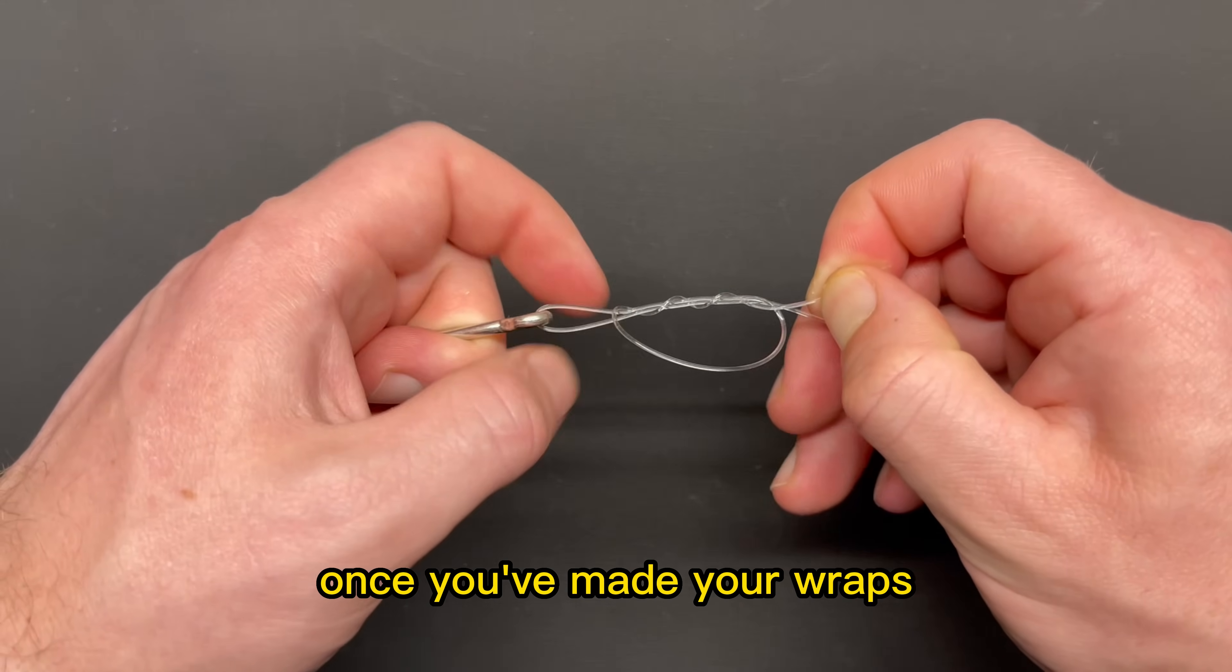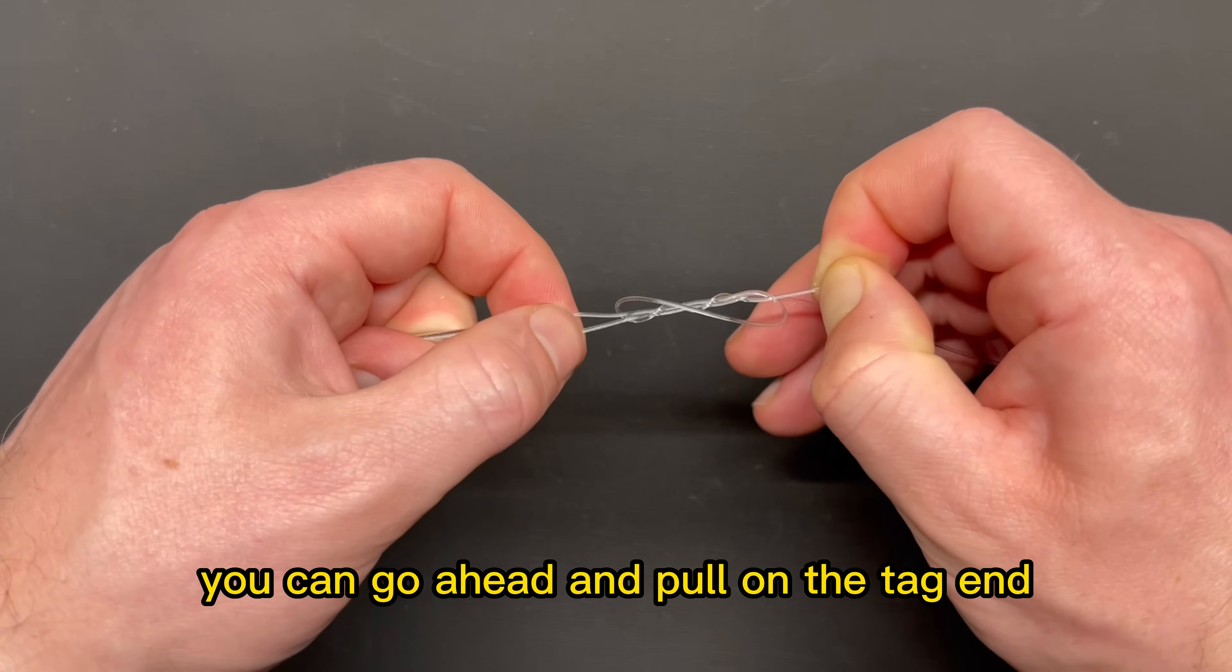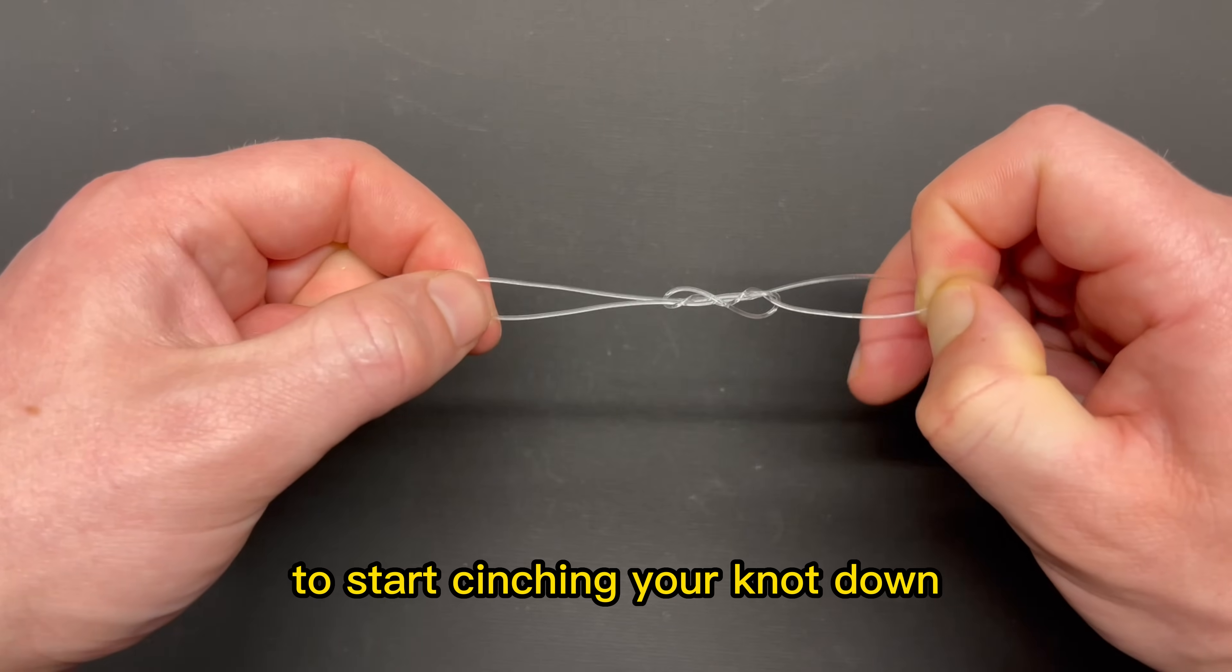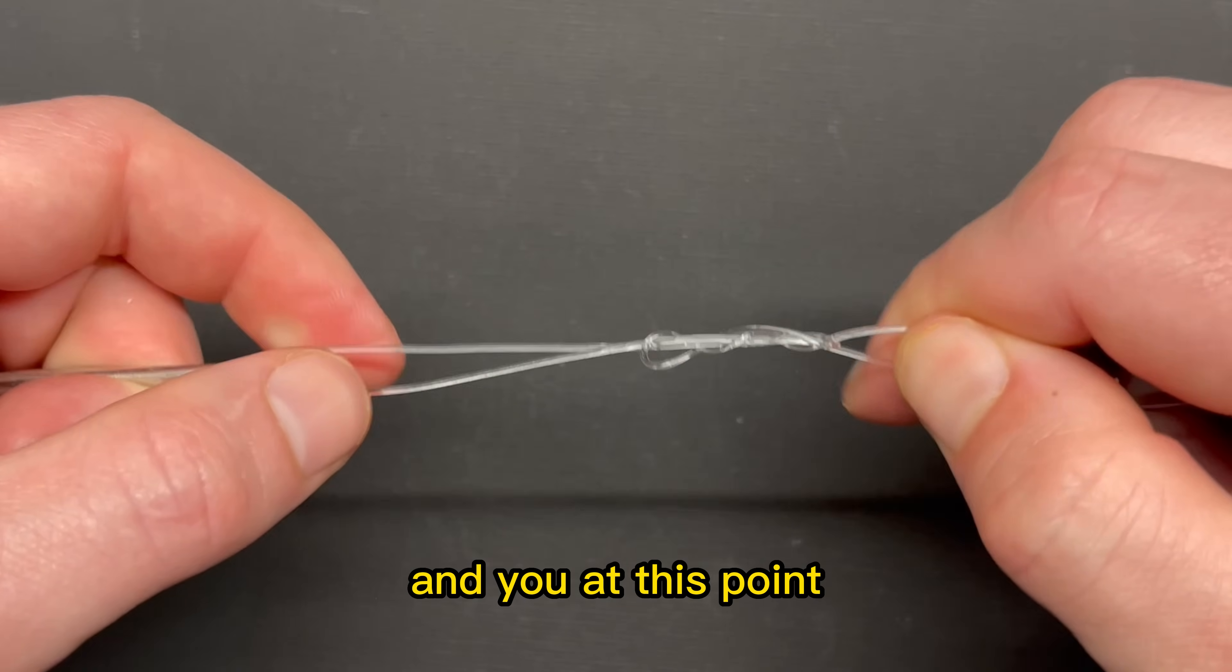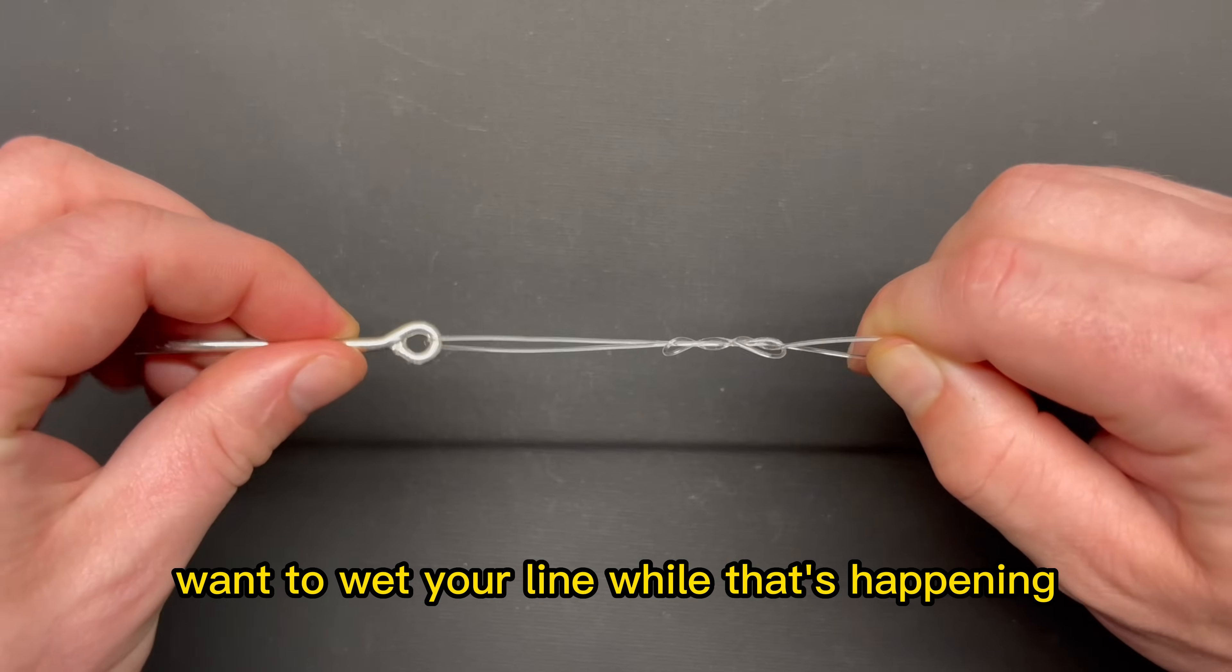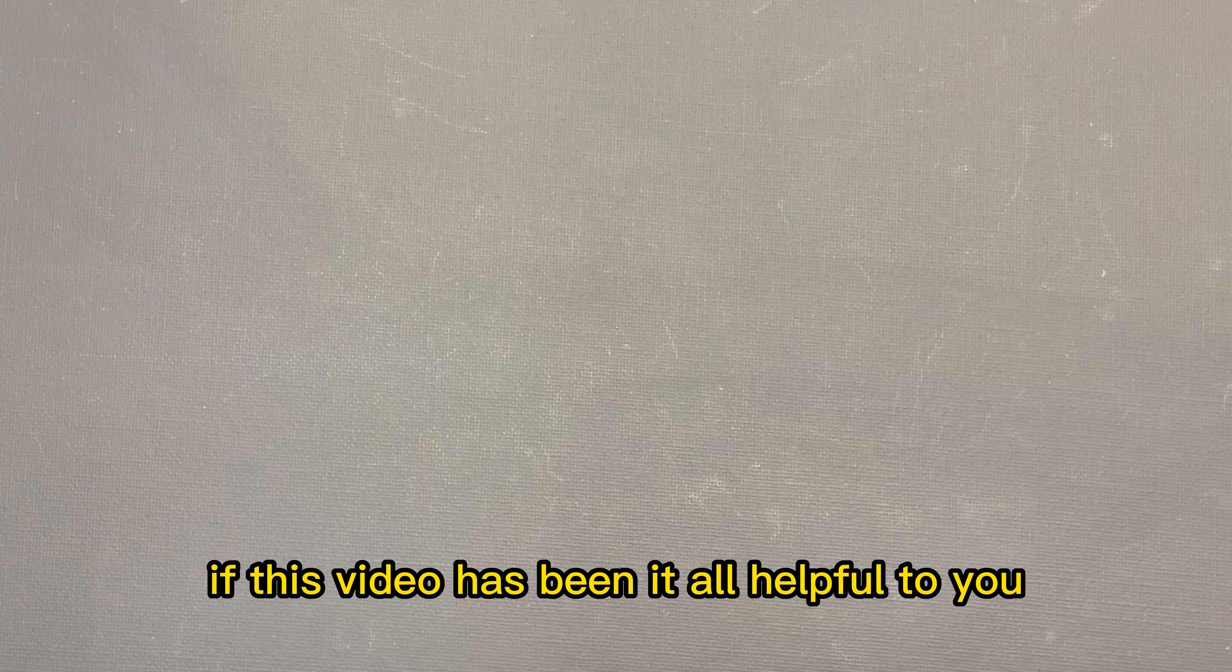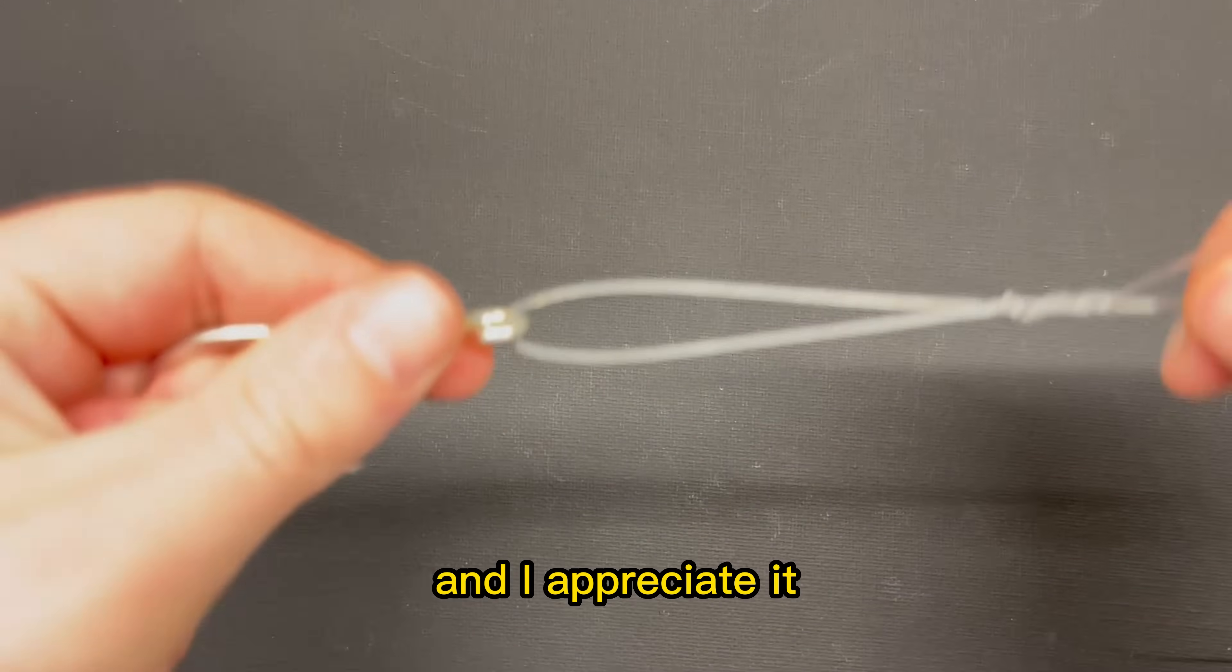Once you've made your wraps, you can go ahead and pull on the tag end to start cinching your knot down. At this point you want to wet your line. While that's happening, if this video has been at all helpful to you, hitting that subscribe button really helps the channel and I appreciate it.